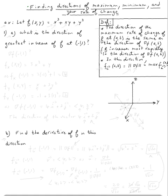The topic is finding directions of maximum, minimum, and zero rate of change. Let's do the first example. Let f equal x cubed plus x y plus y cubed. Question one has two parts, a and b. For part a: what is the direction of greatest increase of f at negative one, one?